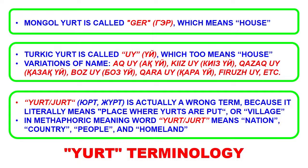We all know that the Mongol yurt is called 'ger,' which apparently in the Mongol language means 'house.' I don't speak any Mongol whatsoever, so this is information from the internet. However, I speak Kazakh and I'm familiar with other Turkic languages. The word 'yurt' is very familiar to me, and this is where the problem is: in Turkic languages, what we refer to as 'yurt' is actually called 'Yi' — or some other variations of this word — and that also means 'house' in Turkic languages.